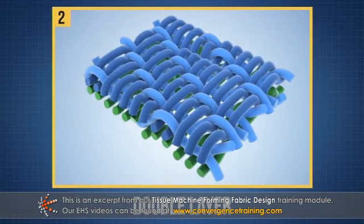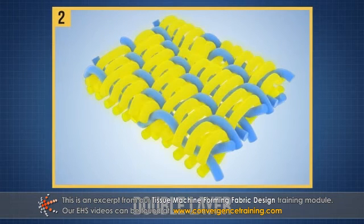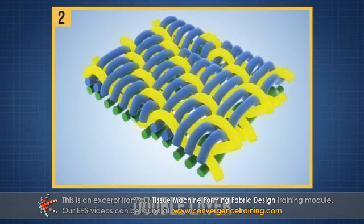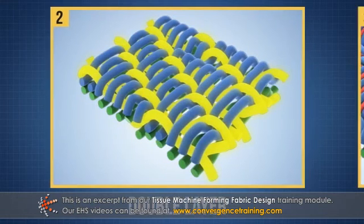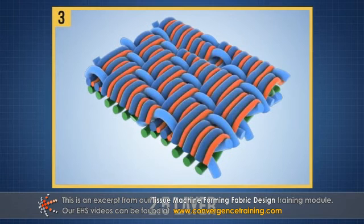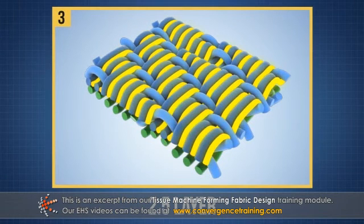Double layer — two sets of CD yarns stacked on top of each other, woven together with one set of MD yarns. Two and a half layer — additional CD yarns, typically smaller in diameter, added to the top layer of a double layer fabric to provide better fiber support.